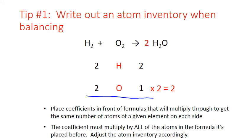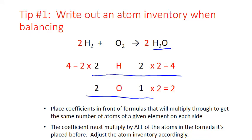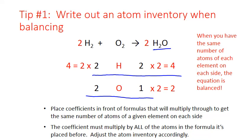It's important to remember that the coefficient must multiply by all of the atoms in the formula it's placed before, so you have to adjust everything that changes. That two means you have two water molecules overall, and each water molecule has two atoms of hydrogen, so you now have two times two, or four atoms of hydrogen on the right-hand side. To balance hydrogen, place a two in front of the molecular formula for hydrogen on the left-hand side. That multiplies through: two times two equals four atoms of hydrogen. The two coefficient does not affect the oxygen because they're separate formulas and separate molecules — coefficients only affect the formula immediately following them. Now the equation is balanced because you have the same number of atoms of each element on each side.